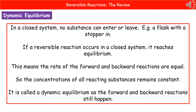If we have a closed system, this is one where no substance can enter or leave - a flask with a stopper in it is a good example. If we've got a reversible reaction occurring in a closed system, it will reach equilibrium. That means the rate of the forward and backward reactions are equal, so the concentrations of all the reacting substances will remain constant. Now this isn't just a static equilibrium, it's a dynamic equilibrium, because the forward and backward reactions are still happening - it's just they're happening at the same rate.